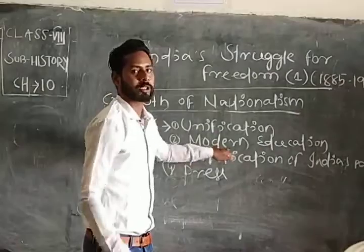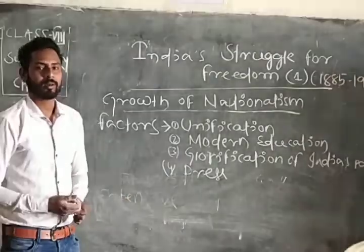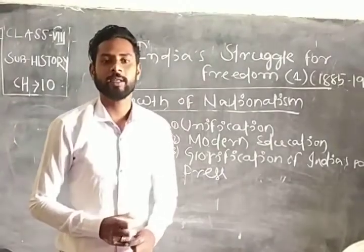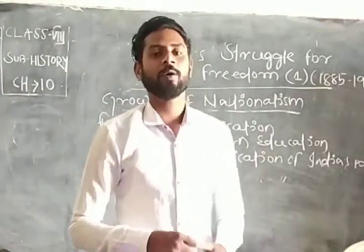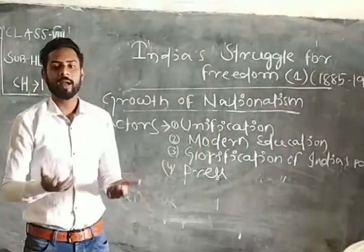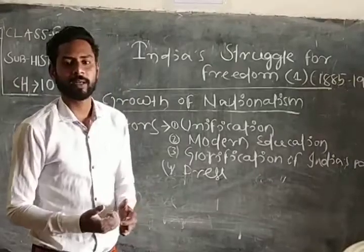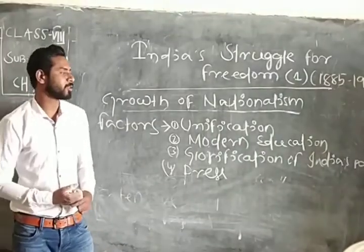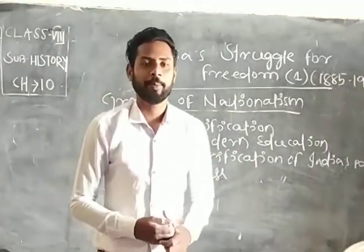After that — modern education. We have already discussed about the modern education system implemented by the Britishers, which gave very much positivity to the Indian society. Through modern education, people were able to gain knowledge about ideologies like nationalism, liberty — liberty means freedom — about rights, fundamental rights, and about fraternity or brotherhood. So this modern education system also gave a very strong impact to arouse nationalism in the mind of every Indian people.